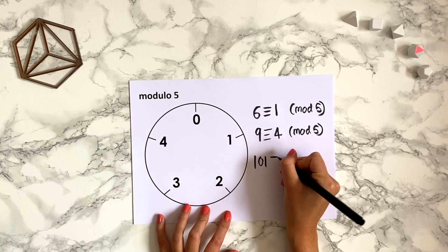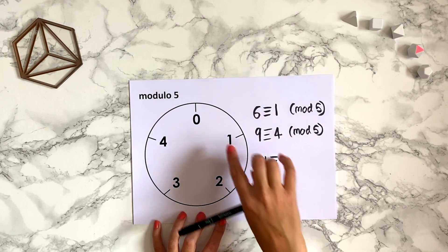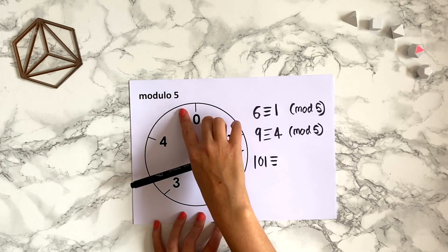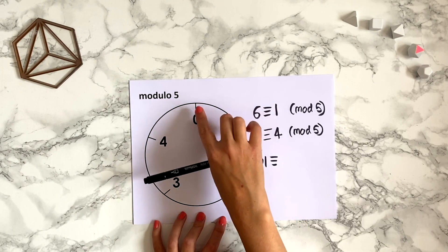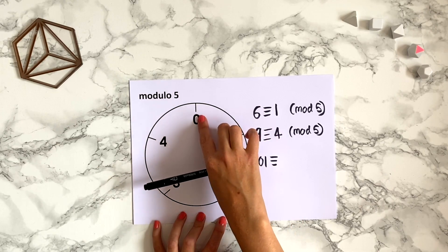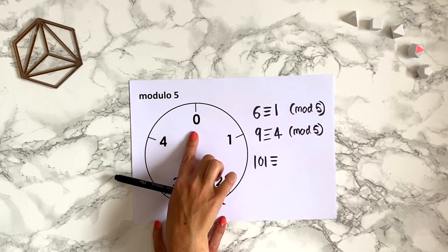How about 101? Well 100 is divisible by 5, so every time you go around this clock you're adding 5. So we go once round for 5, once round again for 10, so the top of the clock is where you hit all the multiples of 5. So 100 would appear at the top.